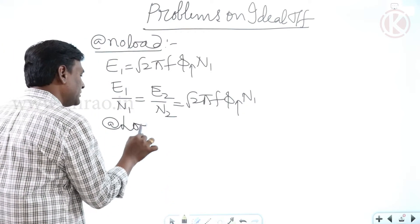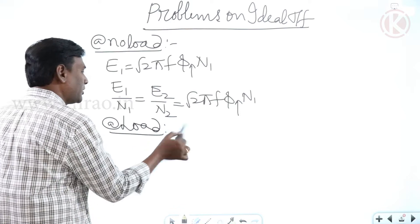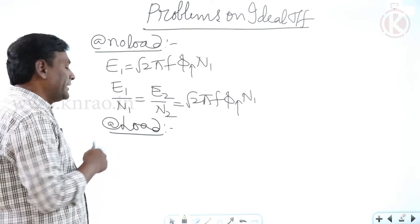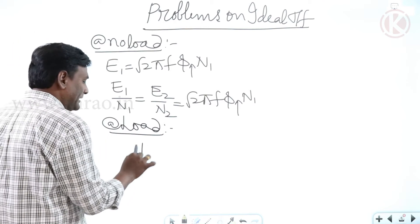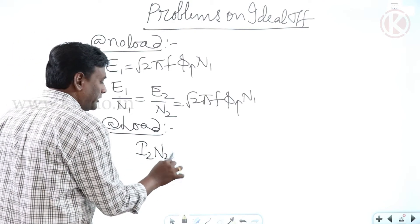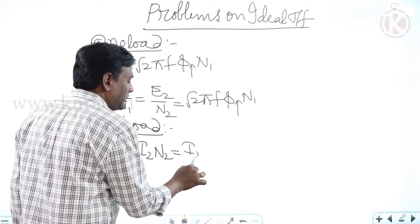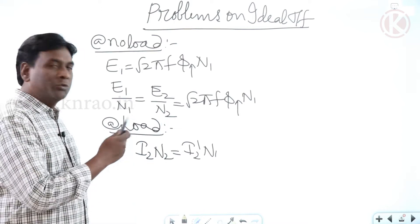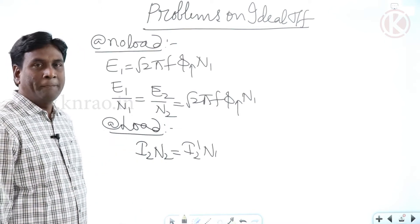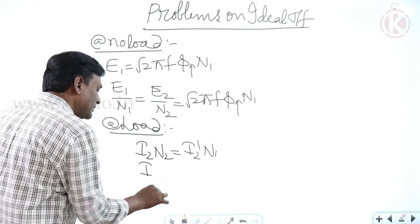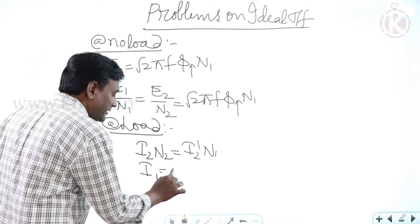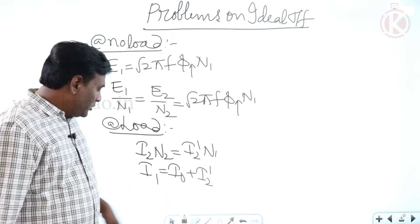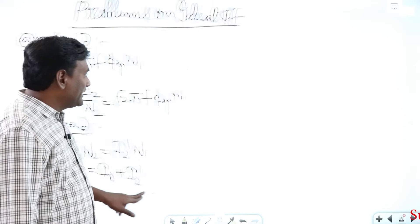We are going to solve all the problems of the ideal transformer using these equations. At loaded conditions: secondary MMF I2·N2 equals primary compensating MMF I2'·N1, because Φ2 will be exactly compensated by Φ2'. The primary current is the no-load current I₀ plus I2'.